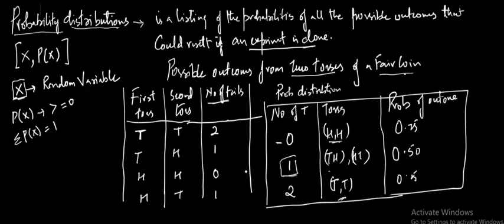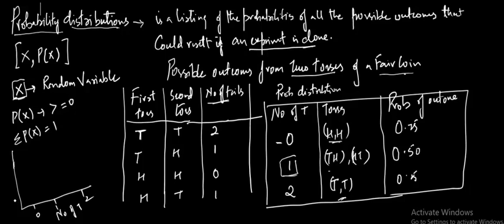We can also make a graph from this probability distribution. I take the number of tails on the x-axis — 0, 1, and 2 — with the associated probabilities 0.25, 0.50, and 0.25. So 0 tails has a probability of 25%, 1 tail has 50%, and 2 tails has 25%. This is the probability distribution of the number of tails when we toss the coin twice.